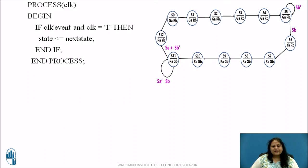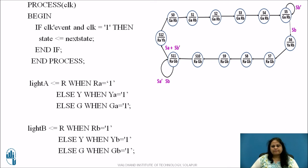As shown the second process is used to update the state register when the rising edge of the clock occurs. Lastly, the signals light A and B are assigned the value among R, Y, G based on the value of the output ports. Finally, end architecture.